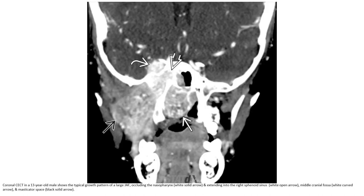Contrast-enhanced CT in a 13-year-old male shows a large juvenile angiofibroma with a typical growth pattern, including the nasopharynx and extending into the right sphenoid sinus, middle cranial fossa, and masticator space.